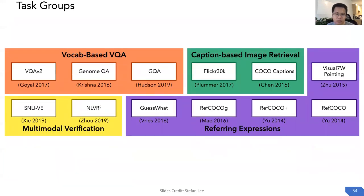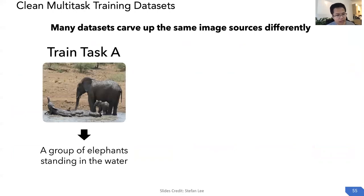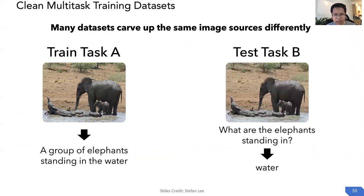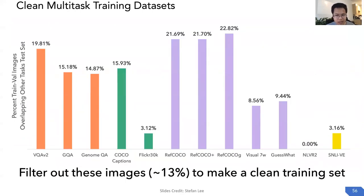One problem is that many datasets are sourced from the same images differently — the same image can be a training example for task A but a test example for task B. We carefully filter out these overlapping images, which is about 13% of all images, to create a clean training set.